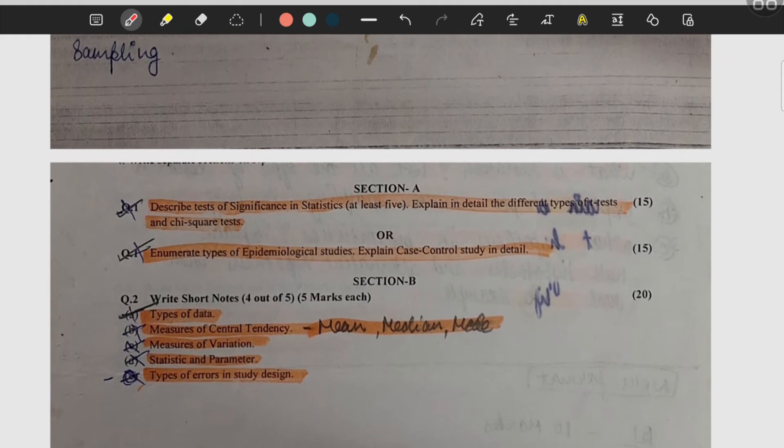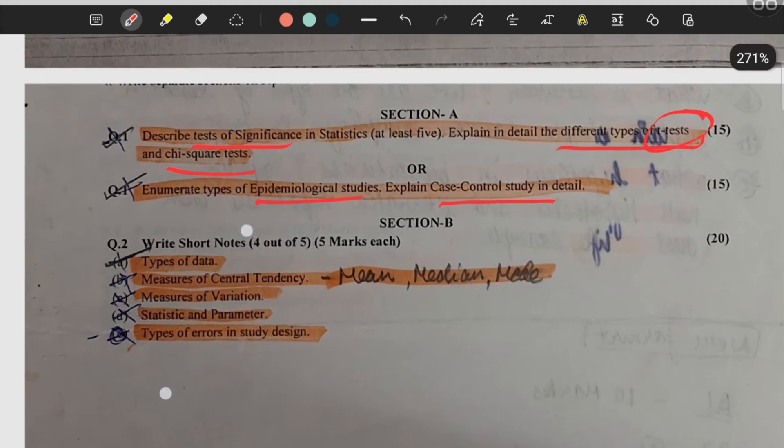Then test of significance, what it is, describe. Then explain in detail different types of t-test and chi-square test. Then epidemiology study and what is case control study.